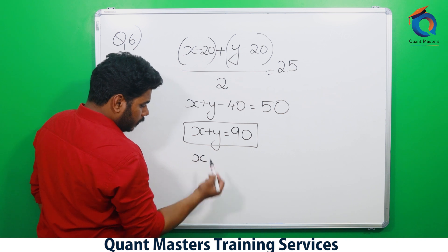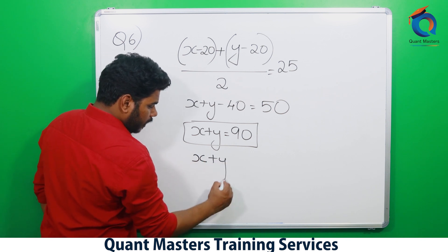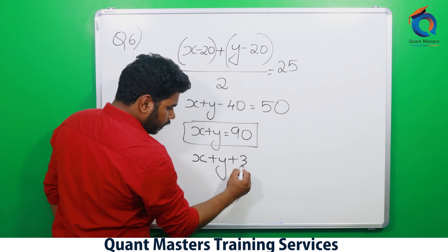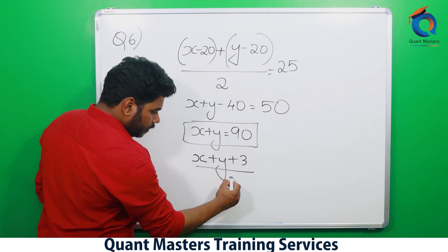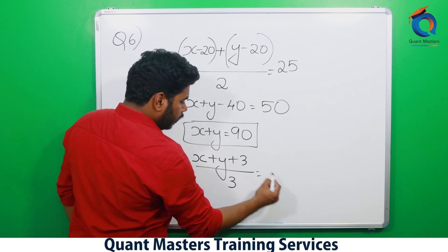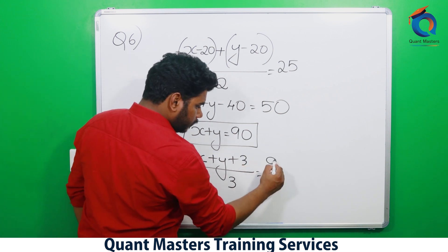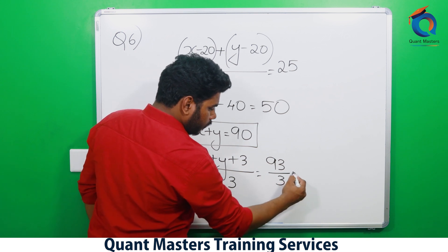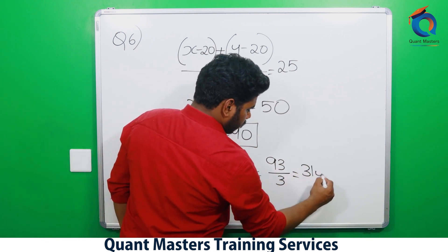The family includes the husband, wife, and the three-year-old daughter, so we divide by 3 people. x + y = 90, and 90 + 3 = 93. So 93 divided by 3 is 31 years.